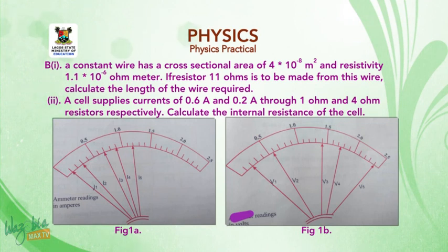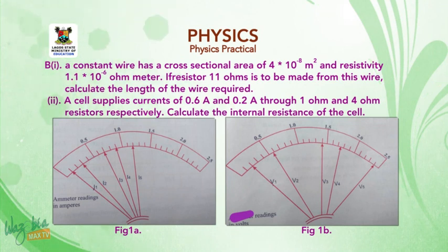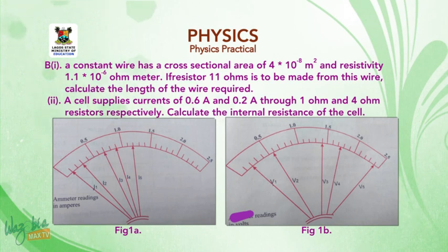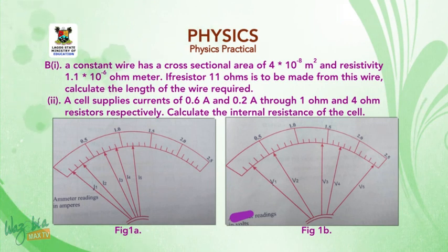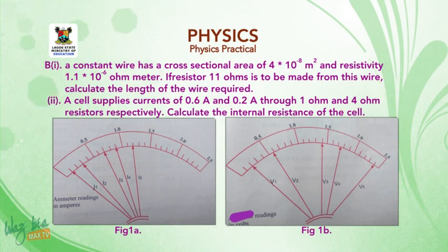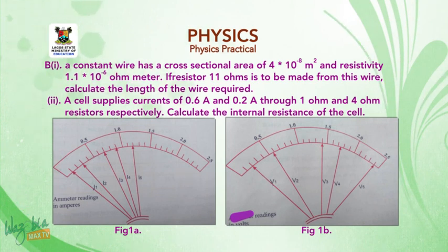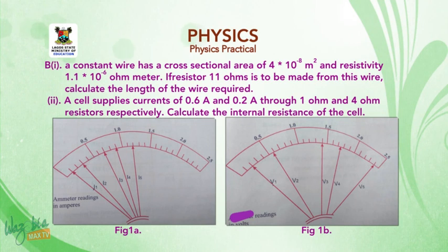Part B: B1. A constantan wire has a cross-sectional area of 4 × 10⁻⁸ m² and resistivity 1.1 × 10⁻⁶ Ω·m. If a resistor of 11 ohms is to be made from this wire, calculate the length of wire required. B2. A cell supplies a current of 0.6 A through a 1-ohm resistor and 0.2 A through a 4-ohm resistor. Calculate the internal resistance of the cell.